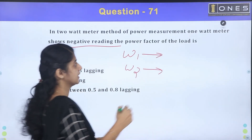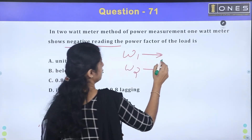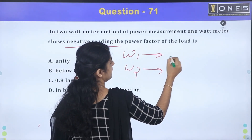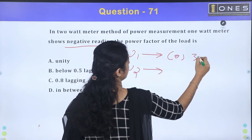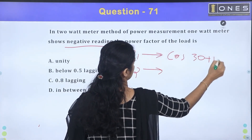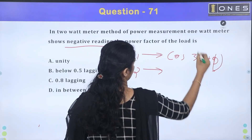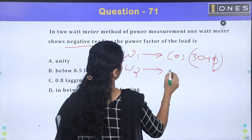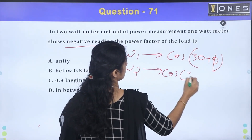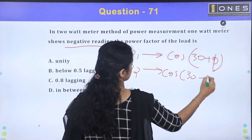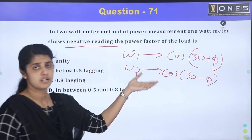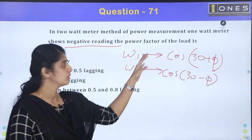The derivation of W1 and W2: W1 is equal to √3·V·I·cos(30° + φ), and W2 is equal to √3·V·I·cos(30° − φ). This is what we have to work with for W1 and W2.